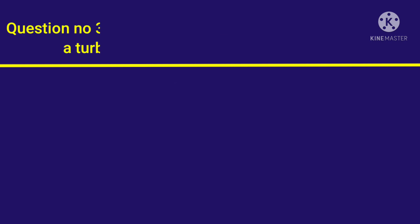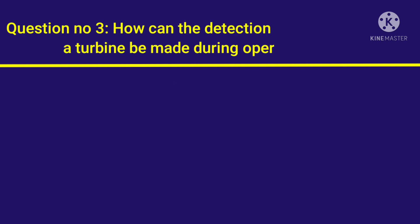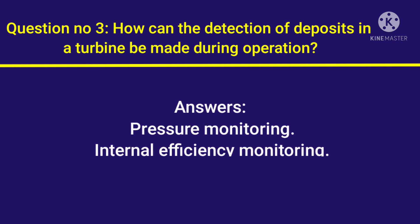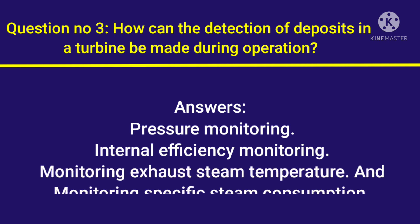Question number 3: How can the detection of deposits in a turbine be made during operation? Answer: Pressure monitoring, internal efficiency monitoring, monitoring exhaust steam temperature, and monitoring specific steam consumption.